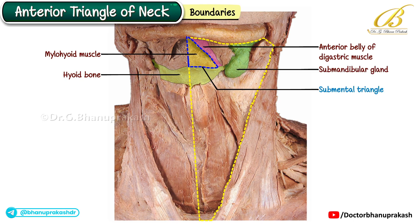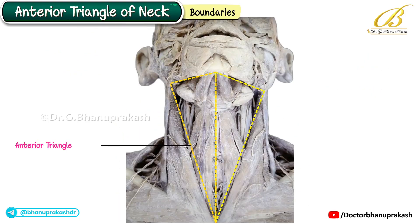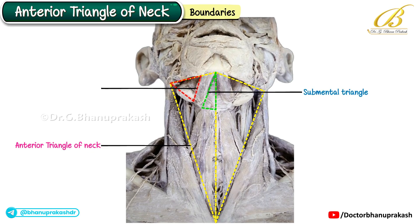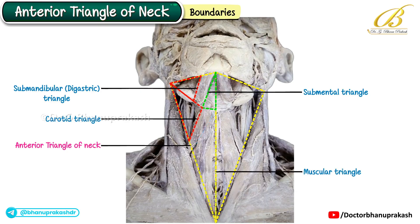The submandibular gland is seen just below the inferior border of the mandible on one side. The anterior triangle of the neck is further subdivided into four smaller triangles: the submental, submandibular, digastric, carotid, and muscular triangles.